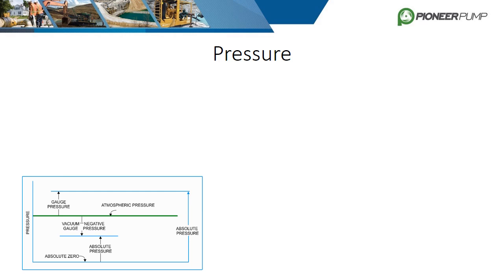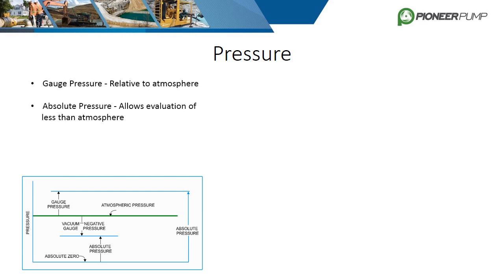When discussing pressure, it is important to first establish what type of pressure we are talking about. The two types of pressure are called gauge pressure and absolute pressure. Gauge pressure is the pressure relative to atmospheric pressure, which is about 14.7 psi at sea level — meaning a standard pressure gauge reading zero is actually at 14.7 psi. Absolute pressure starts at a perfect vacuum and goes up from there.